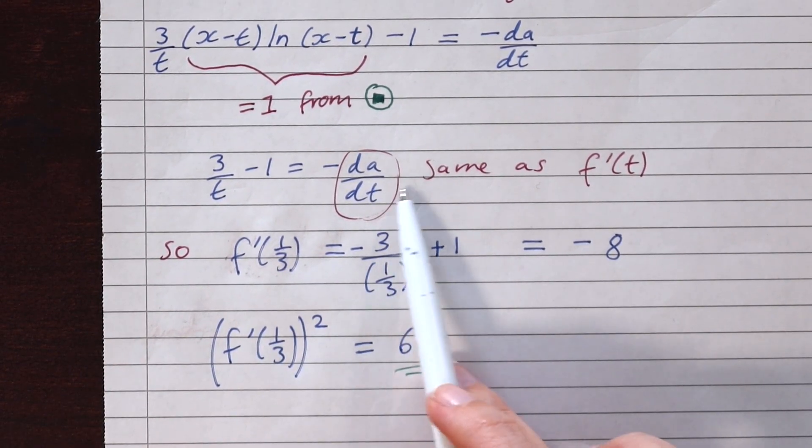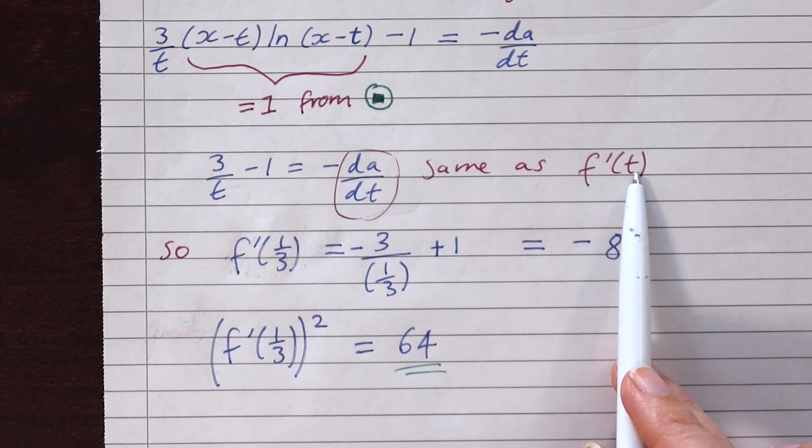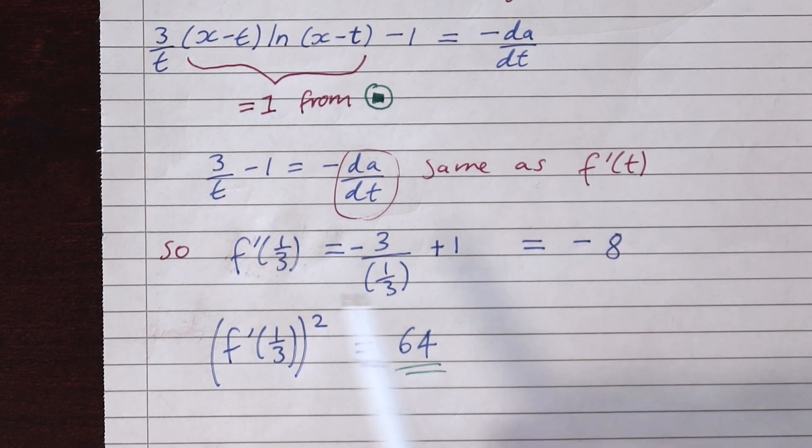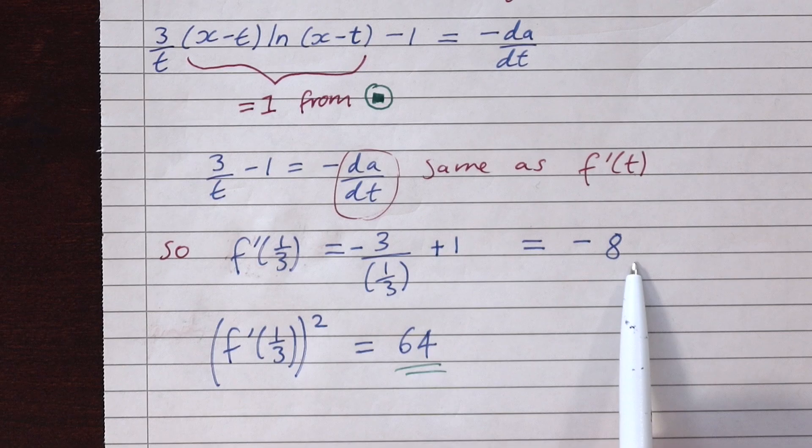A little bit more rearranging, and we get something for da/dt, which is the same as what they're calling f dash of t. And because they wanted f dash of t at t is equal to one third, we can put in one third for our value of t, giving the minus eight, and then they want all of that squared. So that would be 64.